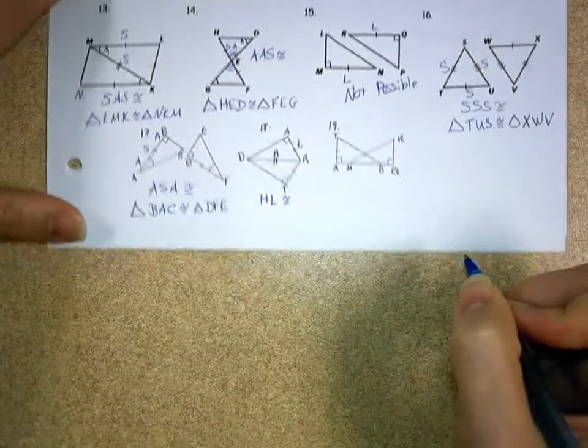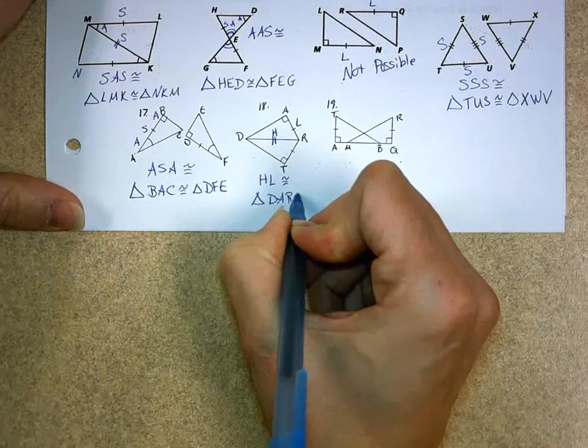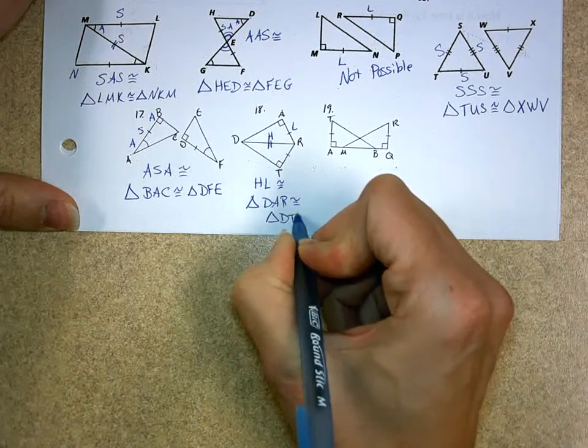None of the other ones would work in this case. So, I get triangle DAR is congruent to triangle, in this case, DTR.